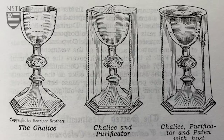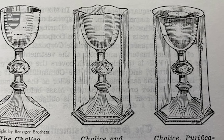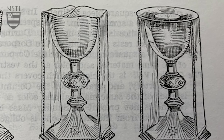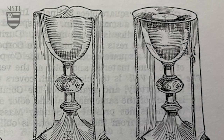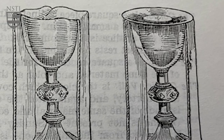The chalice is set up with a purificator. A purificator is always made of linen, and there's a cross usually sewn into the center of it. On top of that is placed the paten, which is a dish where the sacred host is placed.